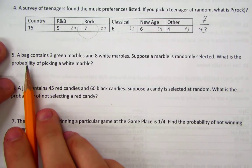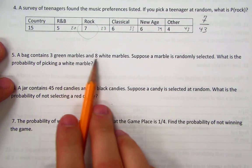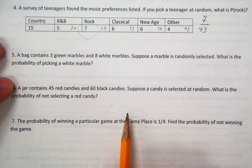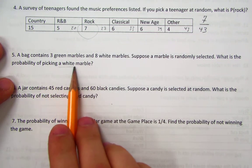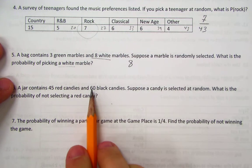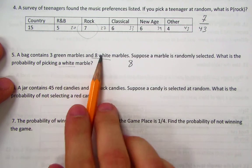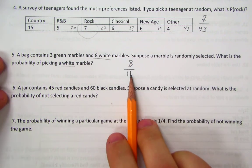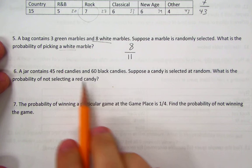Number 5: A bag contains 3 green marbles and 8 white marbles. Suppose a marble is randomly selected. What is the probability of picking a white marble? We're trying to find the numerator being the number of desired outcomes. In this case, white marble, and there are 8 of them. The denominator comes from the total number of marbles. In this case, there are 3 plus 8, which is 11. That's irreducible.